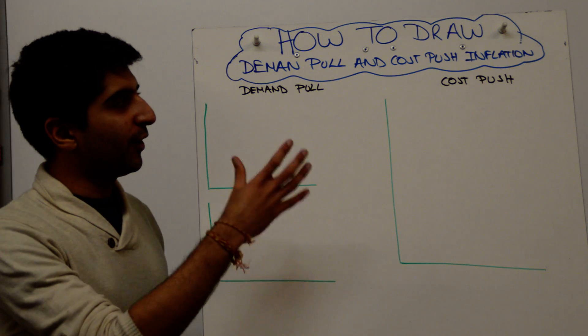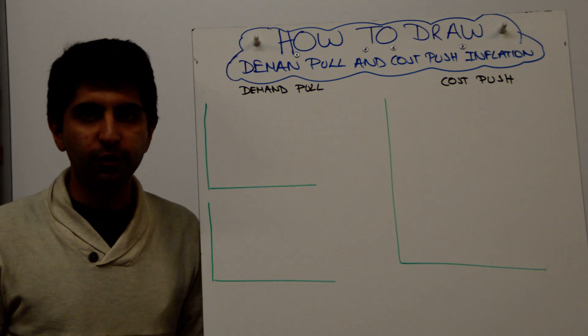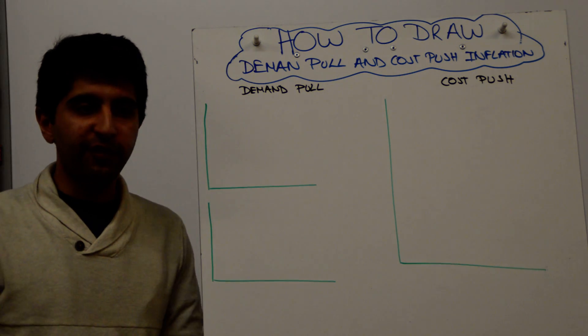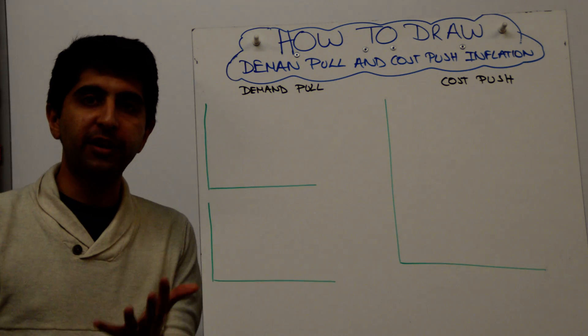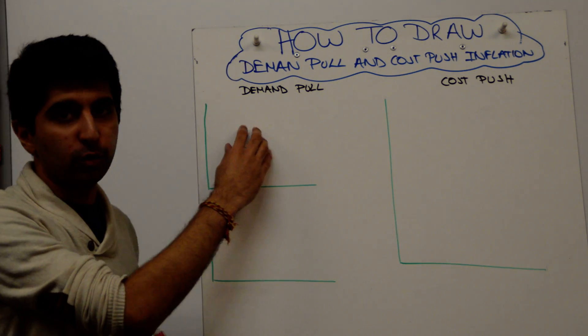Hi everybody, you want to show demand-pull inflation and cost-push inflation - how do you construct these diagrams? Well, let's look at demand-pull inflation first. All it is is a simple shift of AD to the right that will show the higher inflationary pressure. As a result, the classical model here - really simple classical model just with AD.